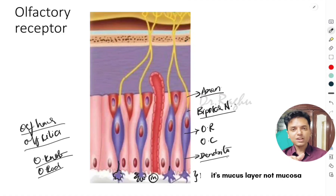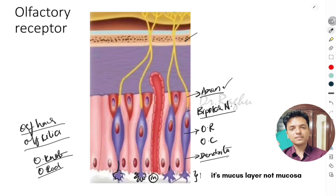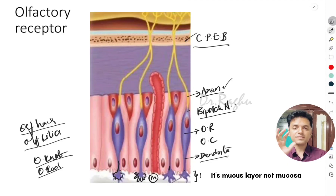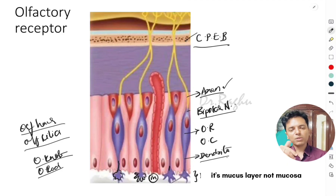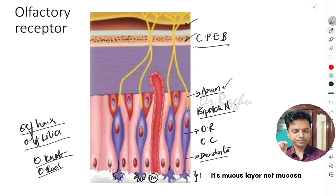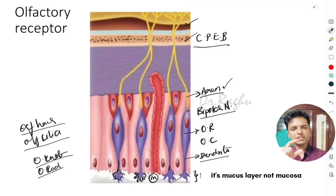The other end of this bipolar neuron has the axon. This axon pierces the cribriform plate of the ethmoidal bone and terminates in a structure above the cribriform plate called the olfactory bulb.